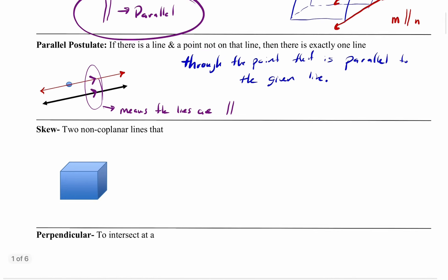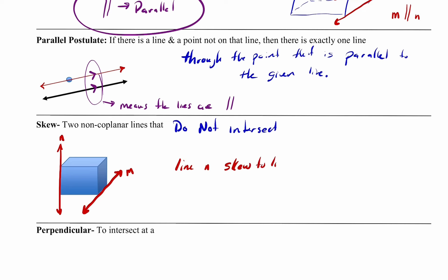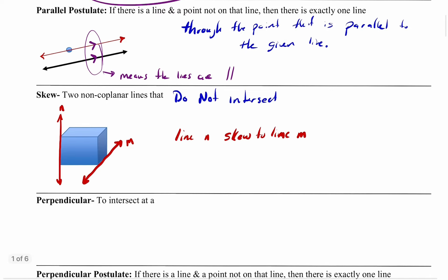We have a different term: skew. Skew is when we have two non-coplanar lines that do not intersect. If we take a vertical line on this edge of the box and a horizontal or diagonal line on this side of the box, these lines are never going to meet, but they're not parallel because they're not in the same plane — they're not running in the same direction. So we would say line N is skew to line M.